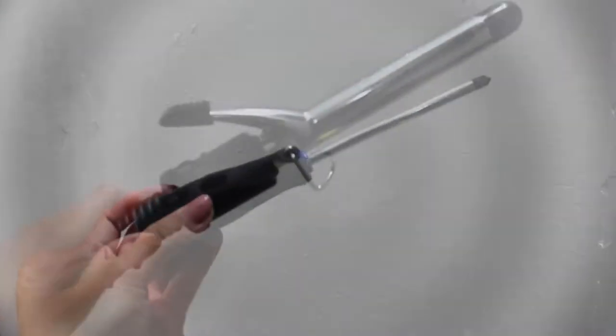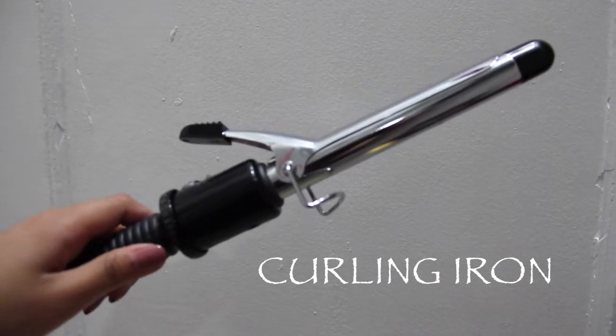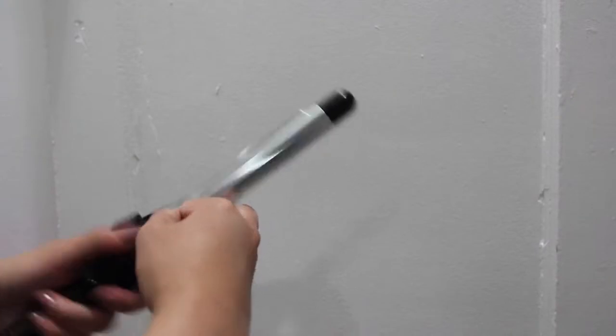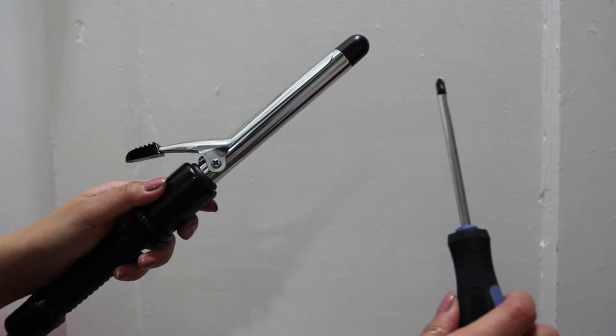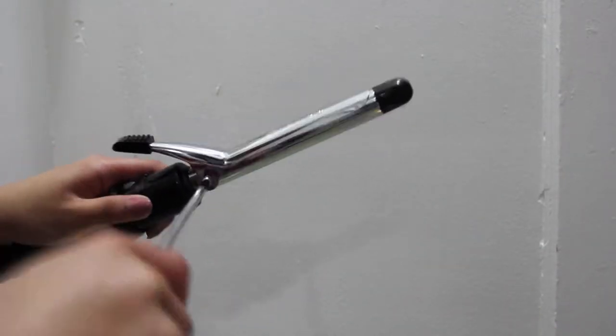You will need a screwdriver and a curling iron, of course. So the first thing we're going to do is take this little spring thing on the curling iron and then unscrew those screws on each side of the curling iron. There will be two of them and we're unscrewing them.